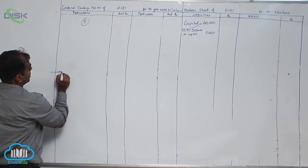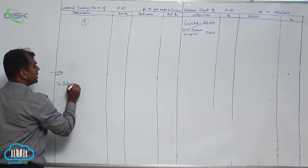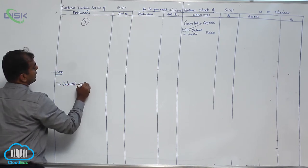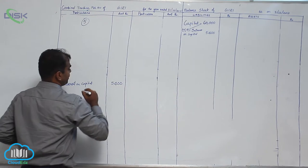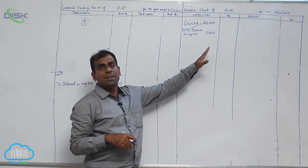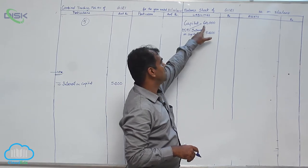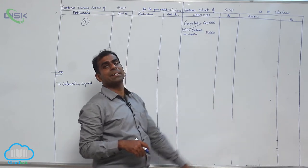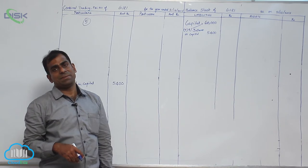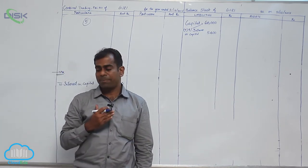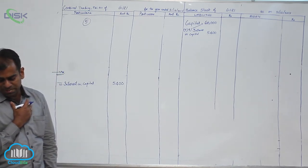In the P&L account on the debit side, we write interest on capital: five thousand four hundred. Now, the question of how to calculate interest on capital when there are drawings — it should always be calculated on the value of capital given in the trial balance, which we call opening capital. Next, the third adjustment: write off two thousand as bad debt and provide five percent reserve for doubtful debts.